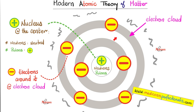Here is a very simplistic model of the atom. Here is the nucleus. The nucleus has neutrons, which are neutral, and protons, which are positively charged. That's why overall the nucleus is positively charged — because of the protons. The number of protons in the nucleus equals the number of electrons rotating around the nucleus.